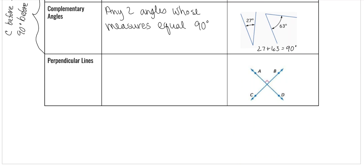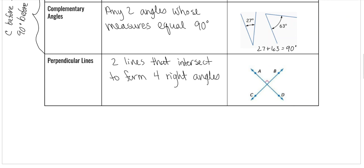Perpendicular lines are two lines that intersect to form four right angles. In this picture, only one right angle is actually drawn, but because that one's there, with vertical angles, this one would also be 90, because vertical angles are always congruent. And if this is a straight line, it has to equal 180, so if the left one is 90, this one also has to be 90. They're all 90, but we only draw one because you can assume all the other ones are 90 given all the other rules we just talked about.